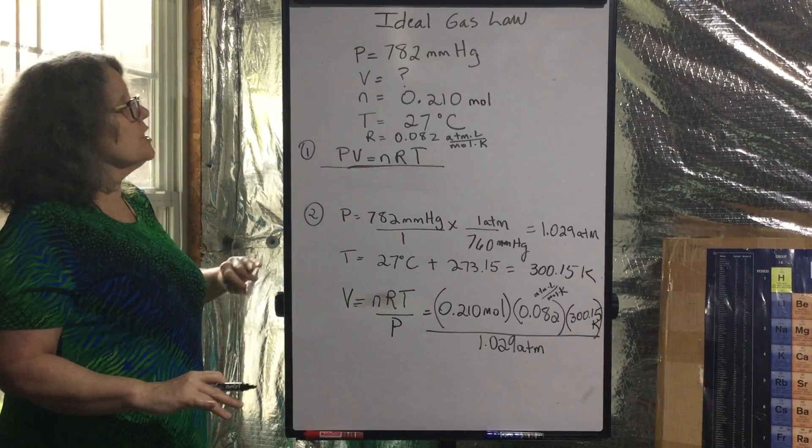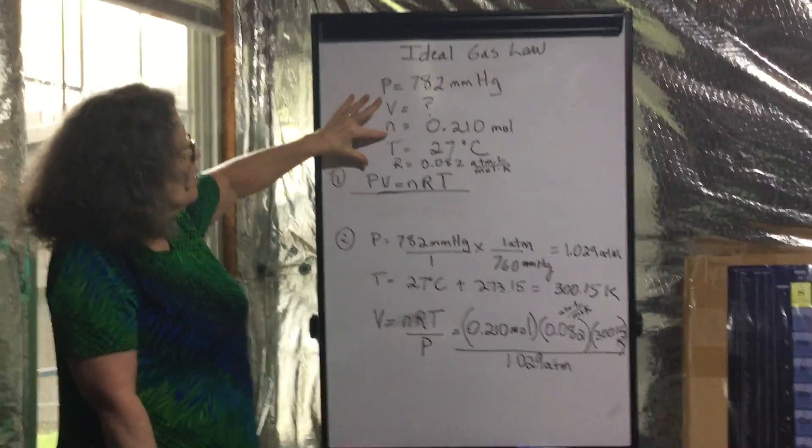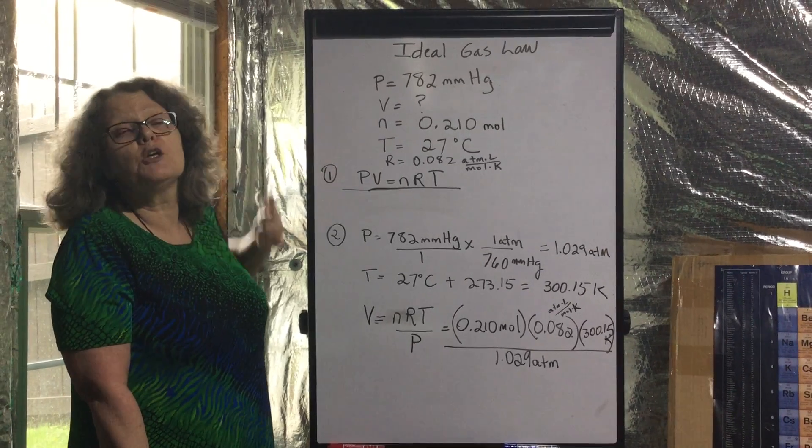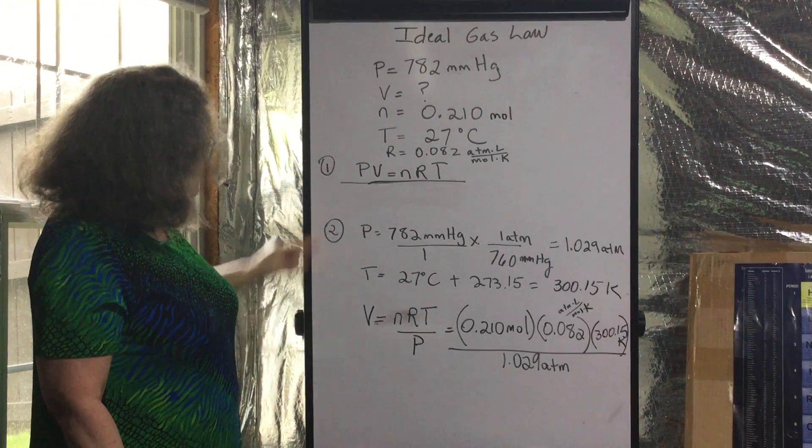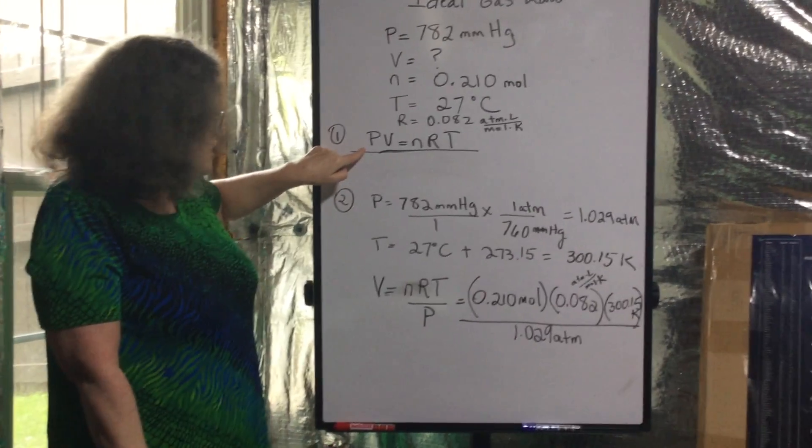What we want to know is under the conditions, under these conditions for pressure, number of moles, and temperature, what is the volume? That's what we're asking. What's the volume under those conditions? So we know our equation, the ideal gas law, PV equals nRT. Now,